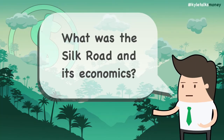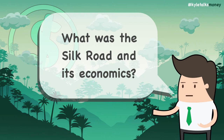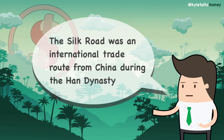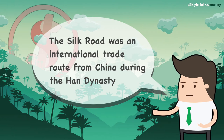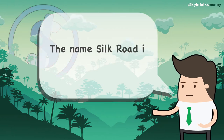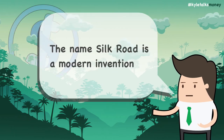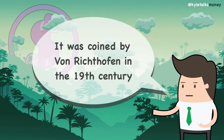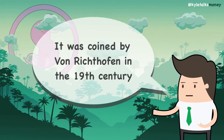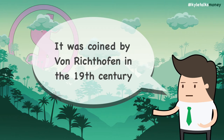What was the Silk Road and its economics? The Silk Road is named after the lucrative international trade in Chinese silk textiles that started during the Han Dynasty. Using one single name for this intricate web of trade routes is a modern invention. The name Silk Road was coined by the geographer Ferdinand von Richtofen in the late 19th century.